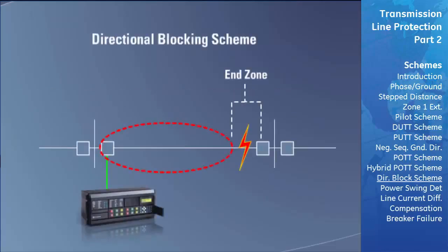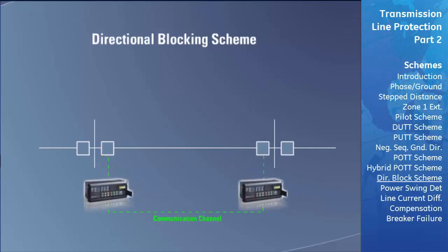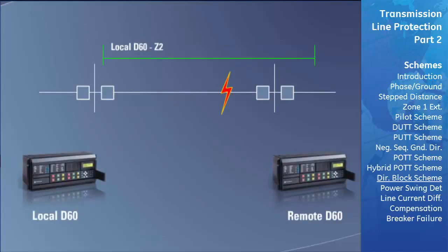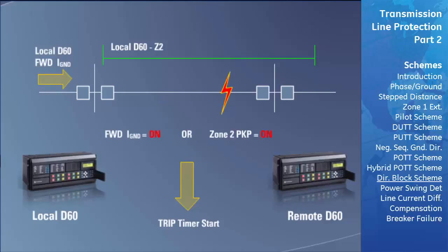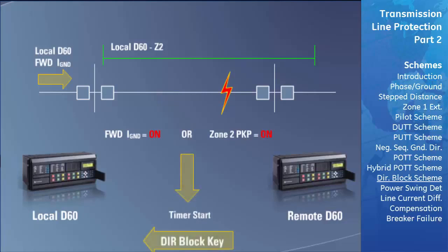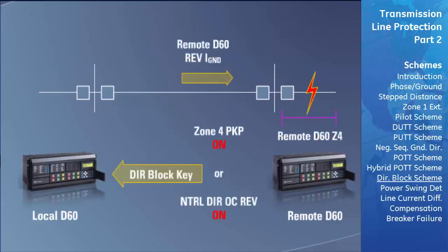The directional blocking scheme is one of the most popular teleprotection schemes used in distance applications today. Its purpose is to speed up tripping of faults in the end zone of a transmission line. The local relay has an additional delay timer started by detecting either a Zone 2 fault or forward ground current. This timer is set considerably shorter than the normal Zone 2 delay. When it expires, the local relay trips unless it receives a block message from the remote relay. The remote relay only sends this blocking key if it detects a fault in its Zone 4 or reverse-flowing ground current, both indicating an external fault.